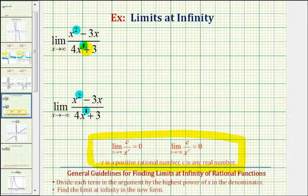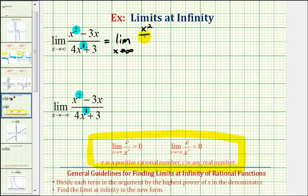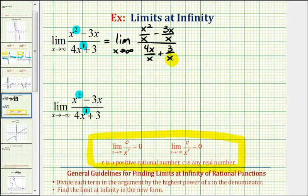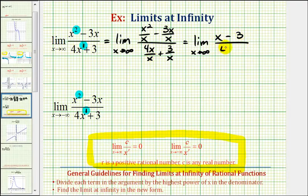Notice the highest power of x in the denominator is x to the first, so we're going to divide each term by x. We'll have the limit as x approaches infinity of x squared divided by x minus 3x divided by x, and the denominator will have 4x divided by x plus 3 divided by x. Simplifying: x squared divided by x is x, 3x divided by x is 3, 4x divided by x is 4, and 3 divided by x is still 3 divided by x.